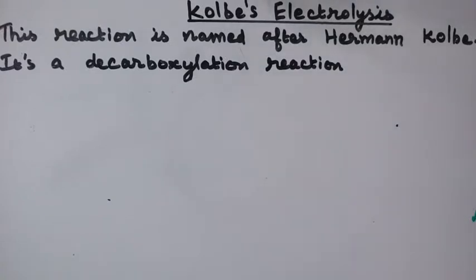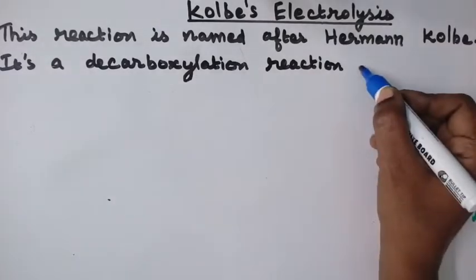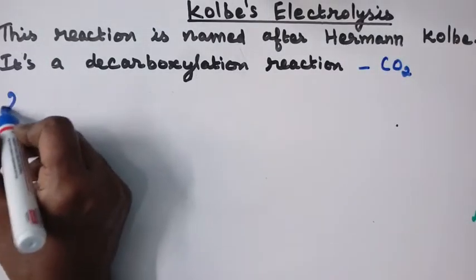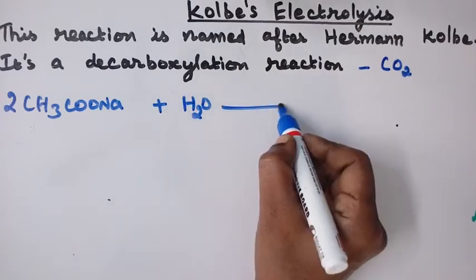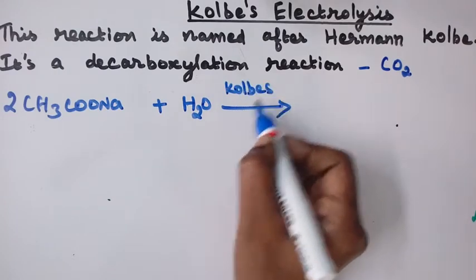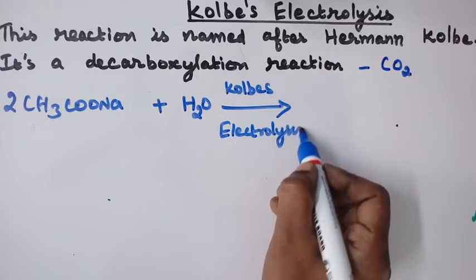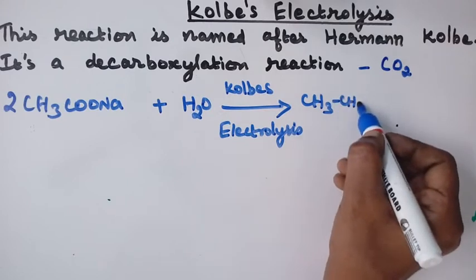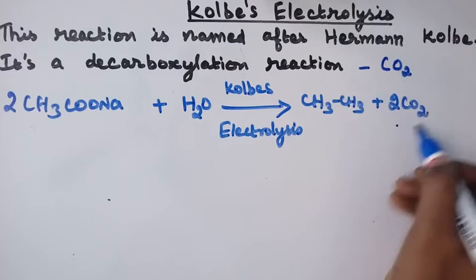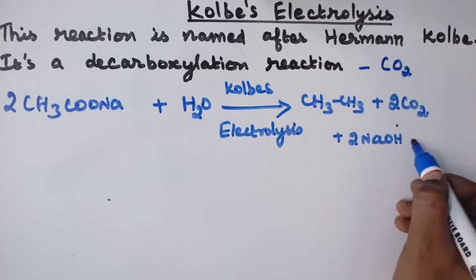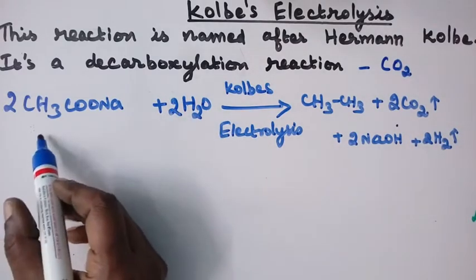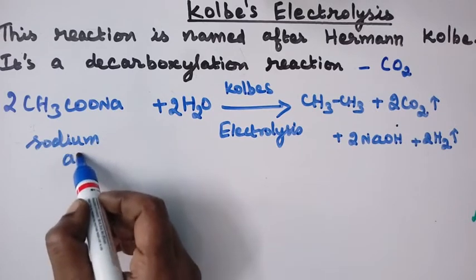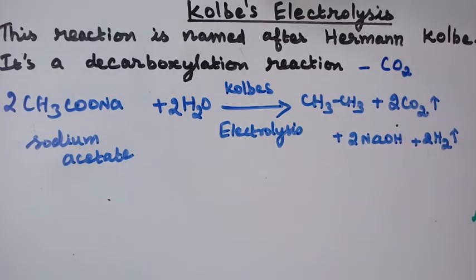Hello students, now we'll see Kolb's electrolysis. This reaction is named after the scientist Herman Kolb. It is a decarboxylation reaction — decarboxylation means removal of carbon dioxide. Two molecules of sodium acetate in aqueous medium on electrolysis give ethane, carbon dioxide, sodium hydroxide, and hydrogen.